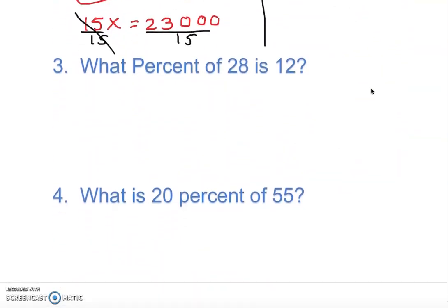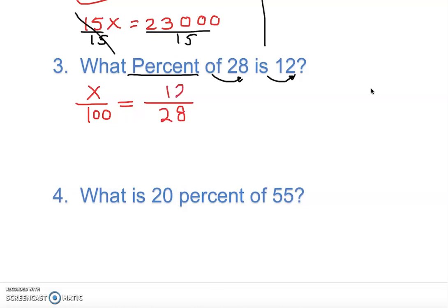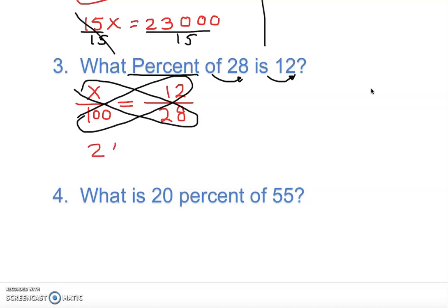Problem three: 'What percent of 28 is 12?' This time there is no percent symbol — the percentage is the missing value. We know the 'of' value (28) and the 'is' value (12). So we set up X over 100 equal to 12 over 28, where 28 is the base and 12 is the amount. Cross-multiplying gives 28X equals 1,200.